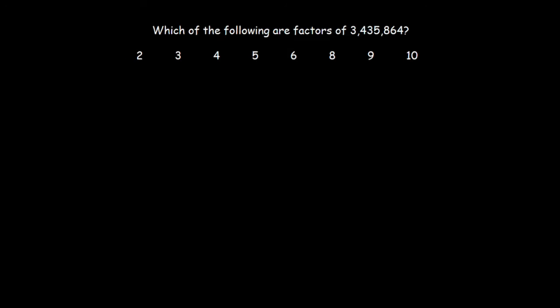In this video, I will be explaining how to solve basic divisibility problems. Let's look at the question. Which of the following are factors of 3,435,864, and are given with the choices 2, 3, 4, 5, 6, 8, 9, 10?